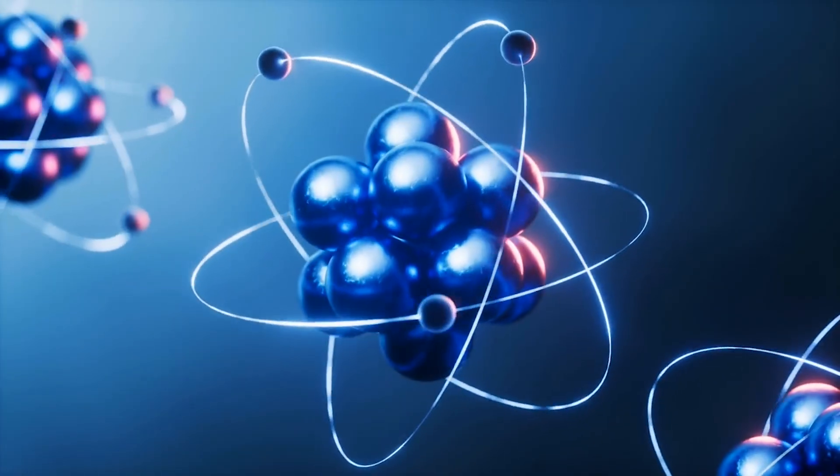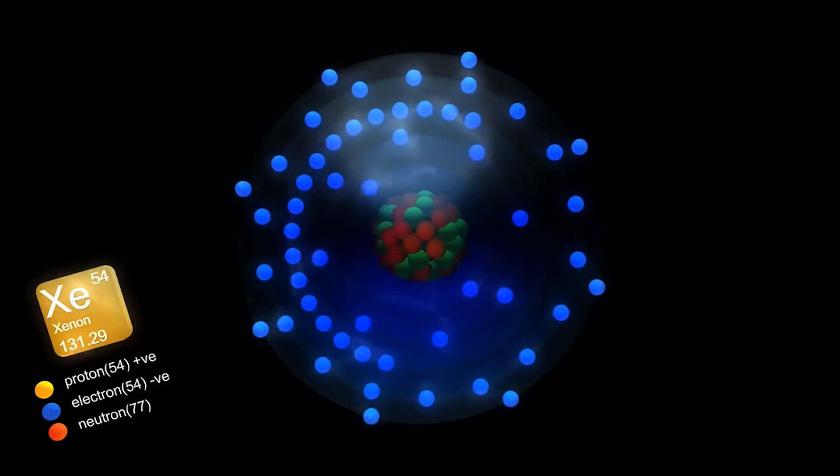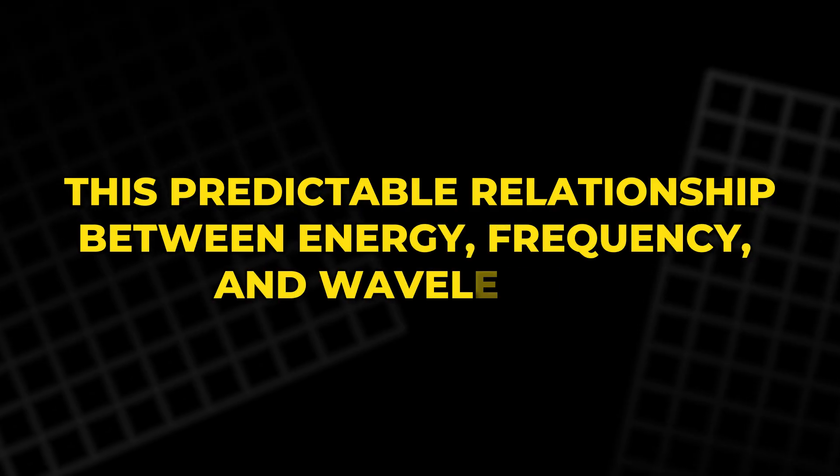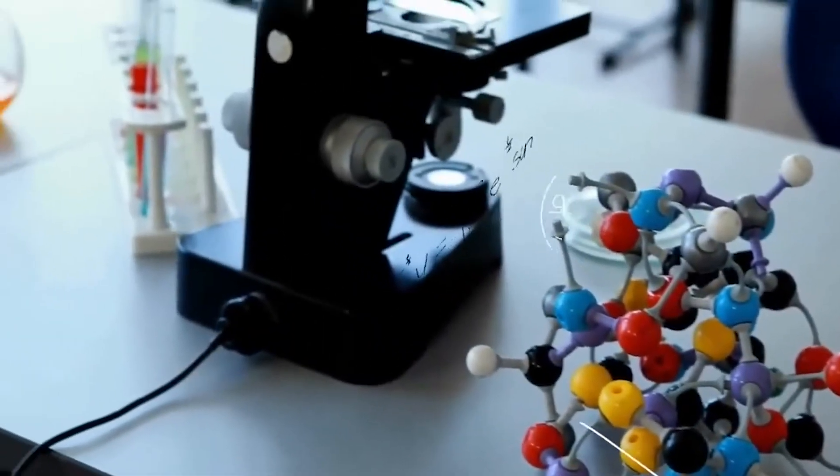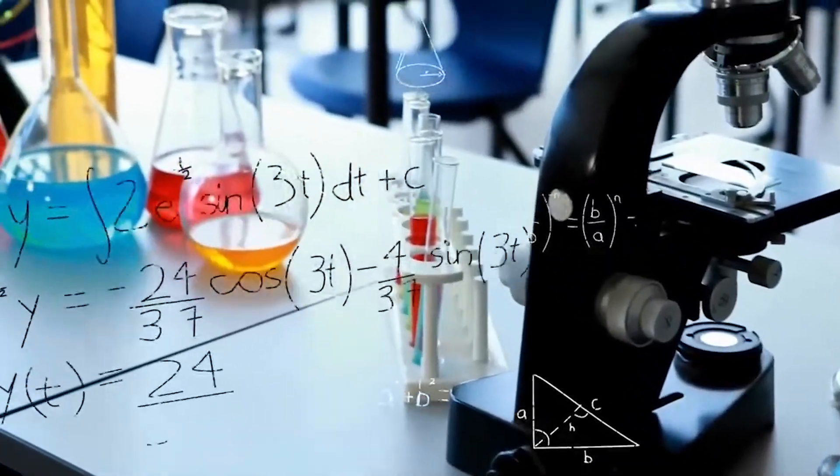Thus, the exact color of light depends on how much energy the electrons release when they fall back into their normal orbits. For instance, neon's strong red-orange color corresponds to a lower energy transition than helium's pinkish tone or xenon's faint blue. This predictable relationship between energy, frequency, and wavelength is one of the most fundamental connections in physics and forms the basis of spectroscopy.